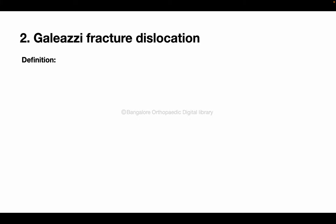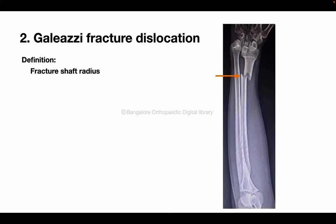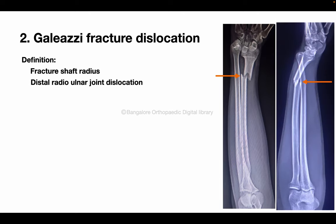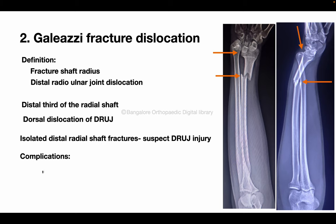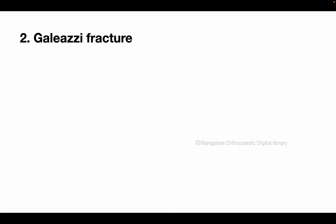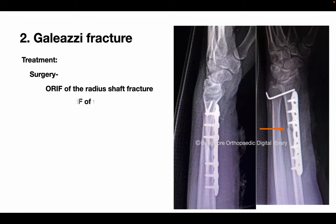A Galeazzi fracture dislocation is when there is a fracture of the shaft of the radius associated with a distal radio-ulnar joint dislocation. The radius fractures at the distal shaft and the DRUJ usually dislocates in the dorsal direction. In an isolated distal radial shaft fracture, distal radio-ulnar joint injury should be suspected. Complications include malunion, limited forearm range of movements and chronic DRUJ pain. Treatment is surgical: open reduction internal fixation of the radial shaft fracture and closed or open reduction and internal fixation of the DRUJ.